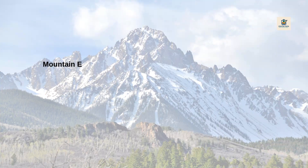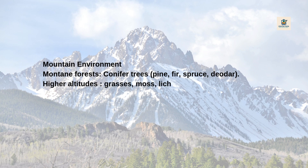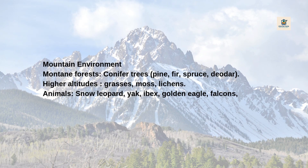Mountain environment: Montane forests contain conifer trees — pine, fir, spruce, deodar. At higher altitudes, vegetation includes grasses, moss, and lichens. Animals found in mountain regions include snow leopard, yak, ibex, golden eagle, falcons, lynx, black bear, gray fox, mountain hare, and Himalayan tahr.